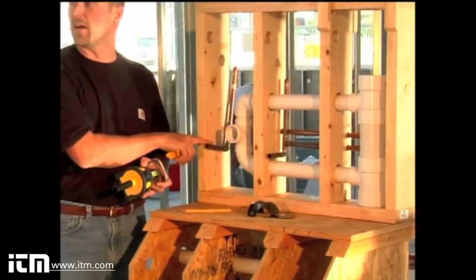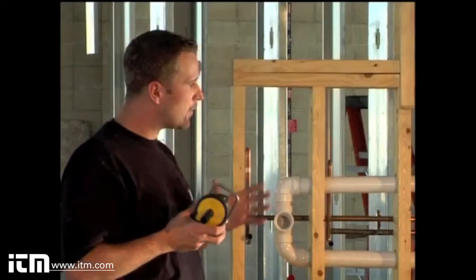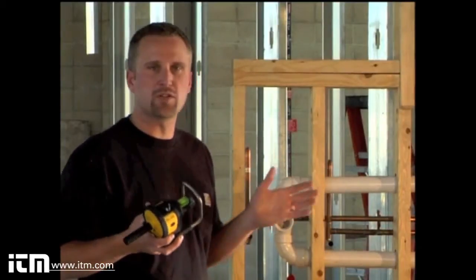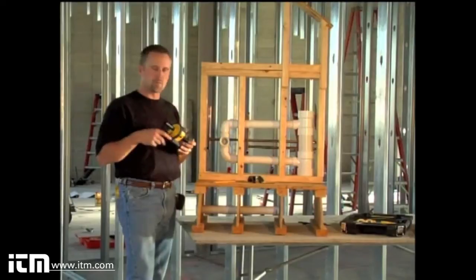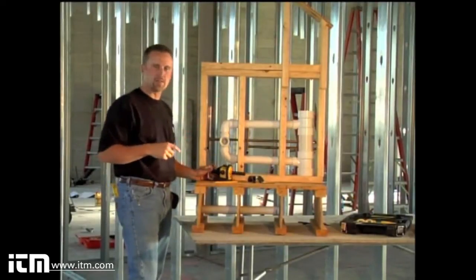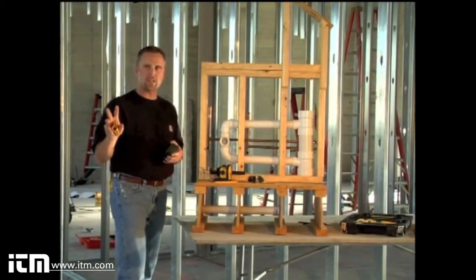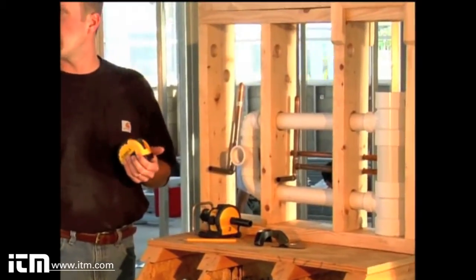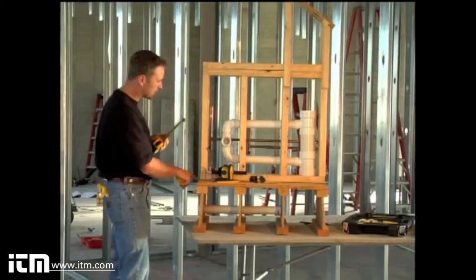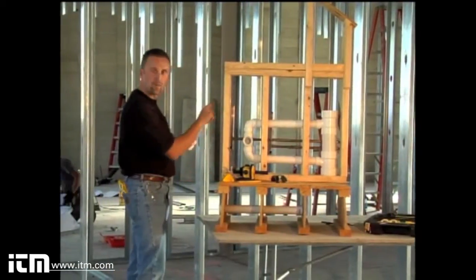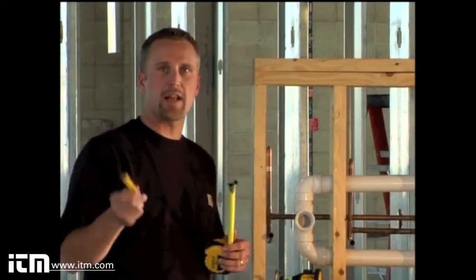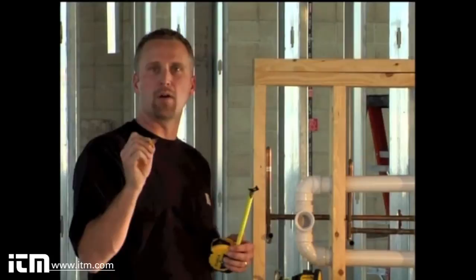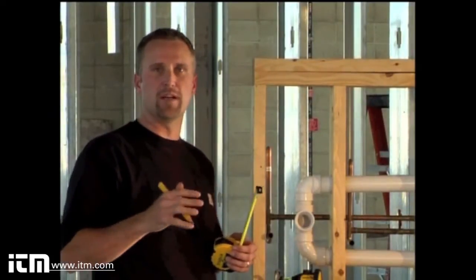The copper line here has to be level. Whenever we drill through studs in a wall, let's say we had to go through five studs, we have to measure up and over on every stud. So if we had five studs to measure on, we'd have to measure ten times. We'd have to measure up and then over, up then over, up then over, and if at any point we mark the wrong number, we cannot re-drill that hole and the pipe won't fit.